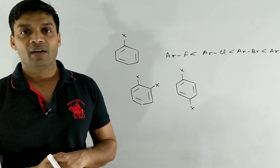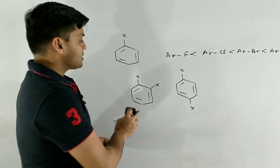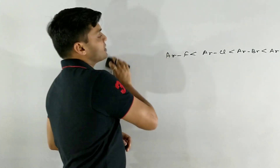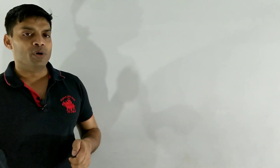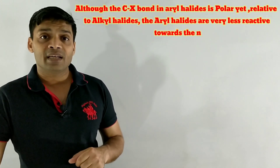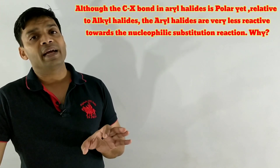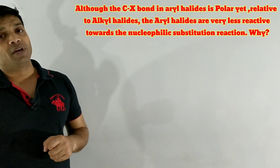So the concepts of melting and boiling points should be clear. Now, after the discussion of these physical properties, we will discuss a very important question with respect to their chemical nature. Although the chemical properties will be covered in the next video section, there is one important question: although the C-X bond in aryl halides is polar, yet relative to alkyl halides, the aryl halides are very less reactive towards nucleophilic substitution reactions. Why?